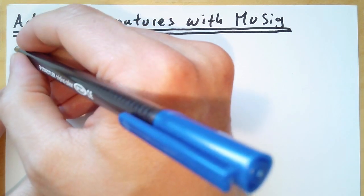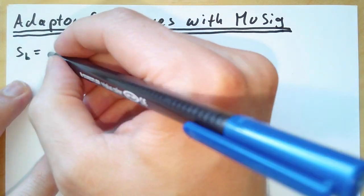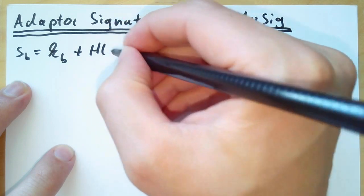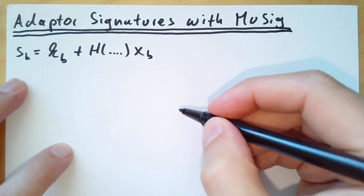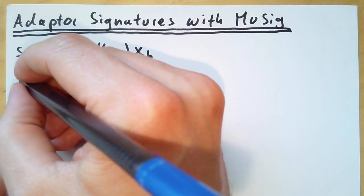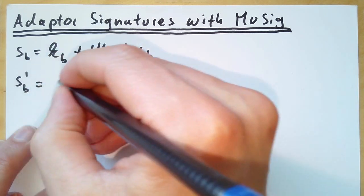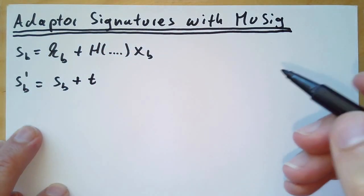Now let us look at b's signature equation, which was sb equals kb plus h times xb. Now we modify this equation a little bit. We compute the value sb', which is the same as sb plus another scalar t.